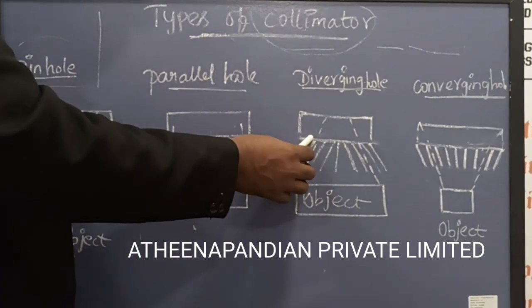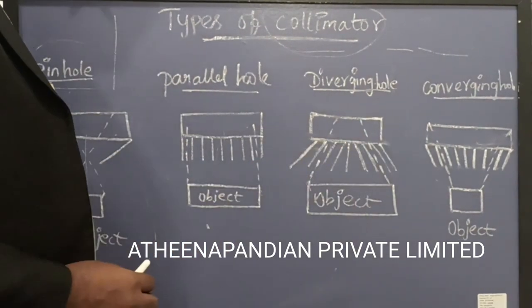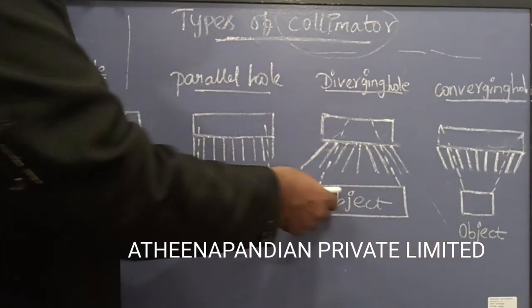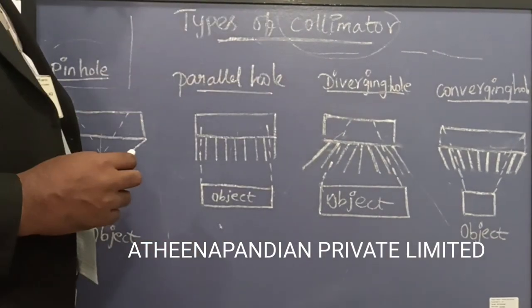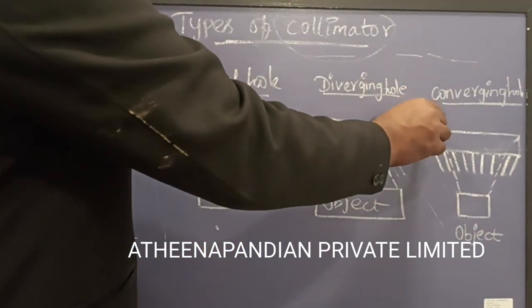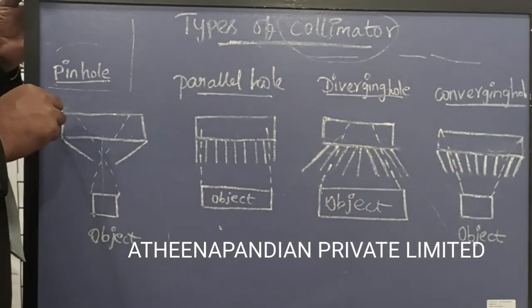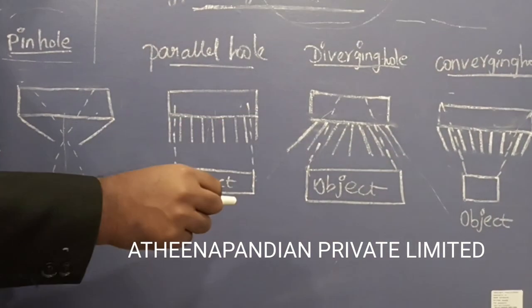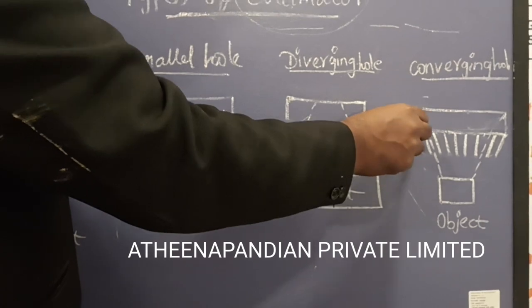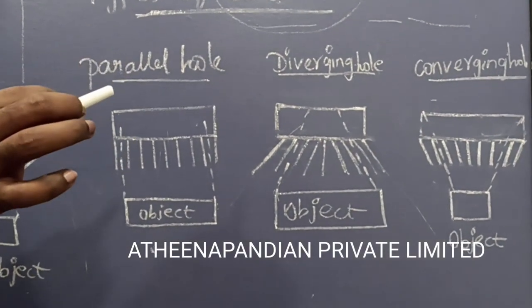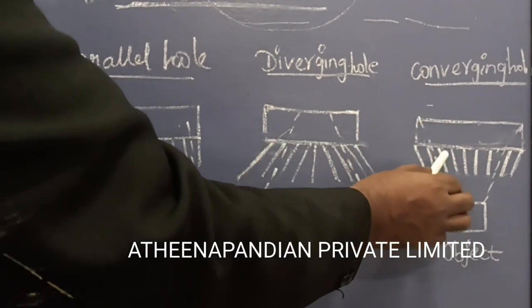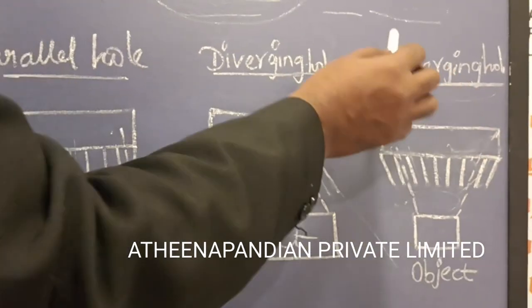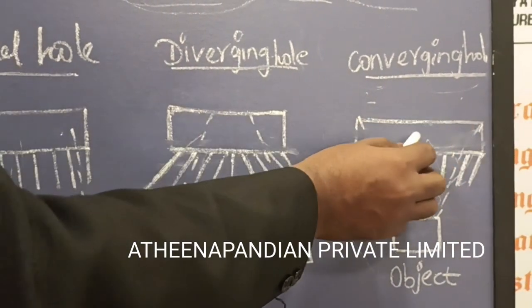For the divergent collimator, the holes are put in an inclined form, so you can spread the rays over the length of the object. If you want to cover a very broad area, then you can use this particular type. For the convergent collimator, the intensity of the X-ray will be large in a small area. All the intensity comes together in a single way. That's why, instead of the pinhole collimator, the convergent collimator is used when high focused intensity is needed.